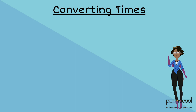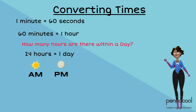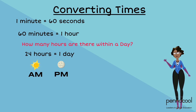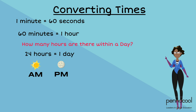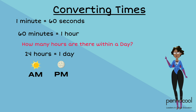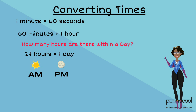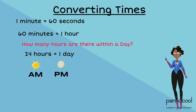Let's start with how many seconds are in one minute. One minute consists of 60 seconds, which means that there are 60 seconds in a minute. What about in an hour? 60 minutes make up one hour, which means that an hour consists of 60 minutes. How many hours are there in a day? Well, there are 24 hours in a day — 12 of them are daytime hours and 12 of them are nighttime hours.